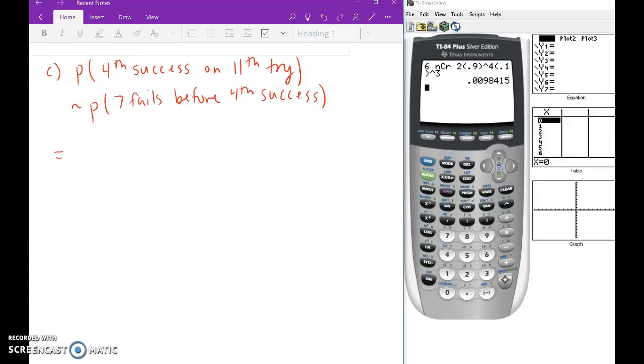All right, so once again, r plus k minus 1, choose r minus 1, q to the k times p to the r. Let's plug and chug here. So this is going to be 11 take off 1, so that's 10, choose 3, right, because again, r is 4. Remember, r is the number of successes. So there's r, and over here, the fails is k. 0.9 to the k, which in this case is 7, and then 0.1 to the 3. Sorry, that would be 0.1 to the 4, because r is 4 there.